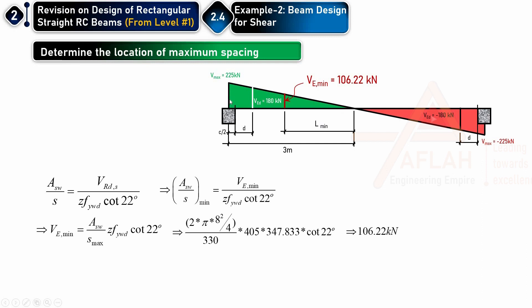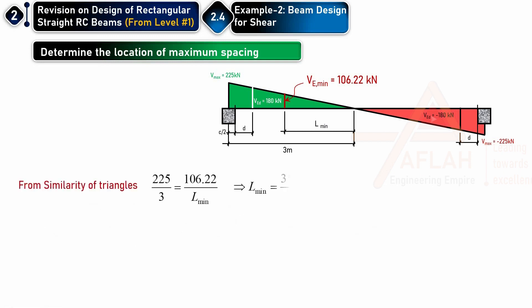I know this is 225 by 3 will be equal to 106.22 by l which I don't know. But with this similarity of triangle, I can simply find l to be equal to 1.416, so I better take 1.4.